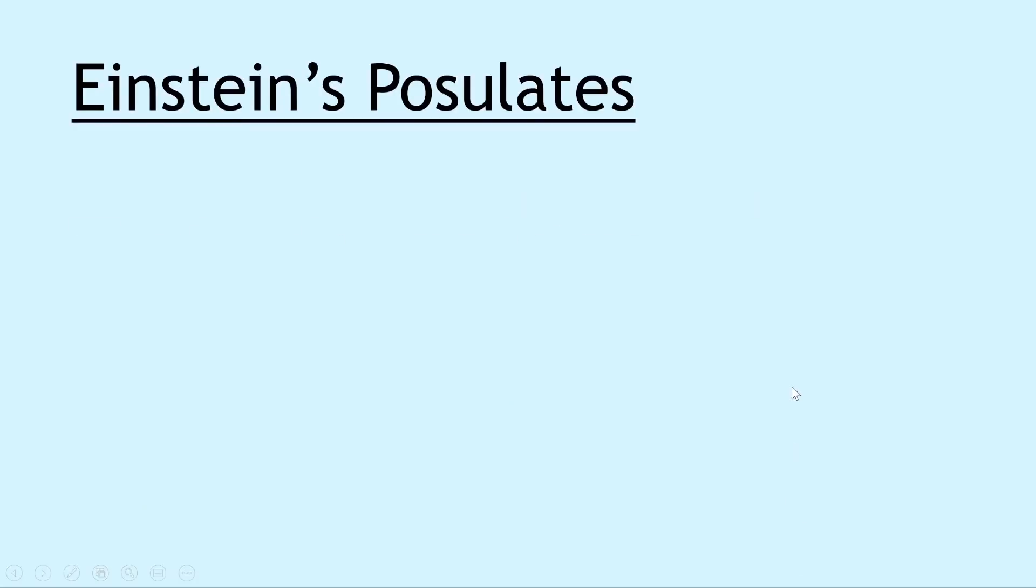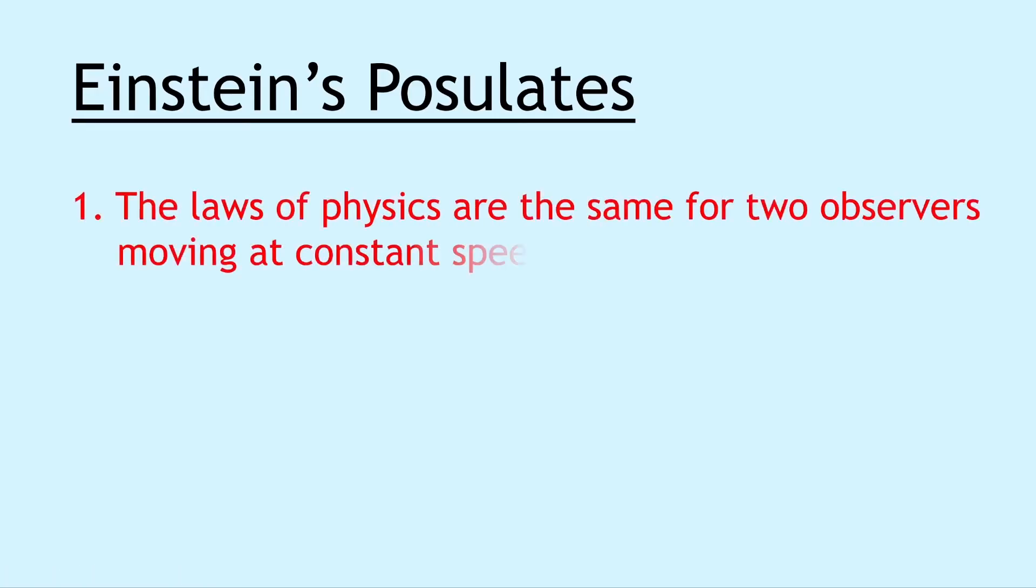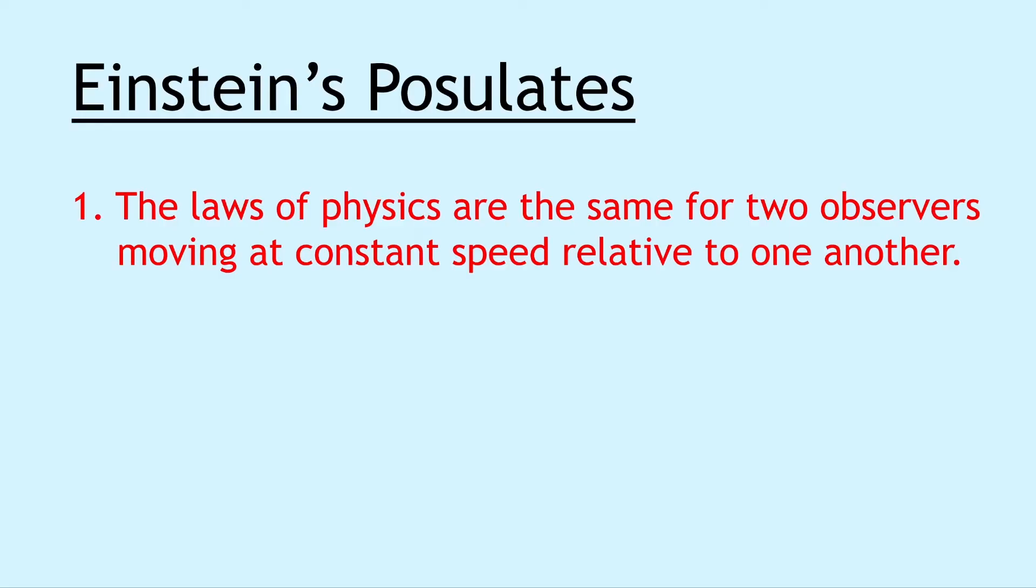Next we have Einstein's postulates and these are two postulates that you need to know. The first one is that the laws of physics are the same for two observers moving at constant speed relative to one another. And the second one is that the speed of light in a vacuum is the same for all observers. So you should remember that nothing can travel faster than the speed of light.